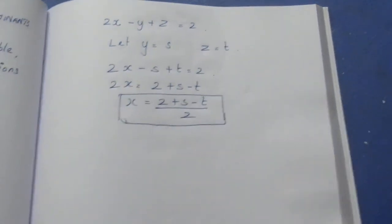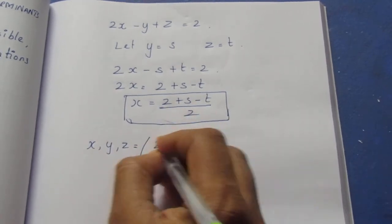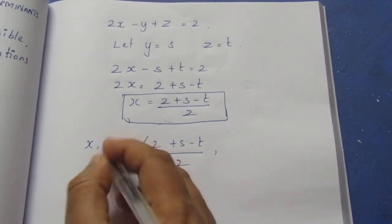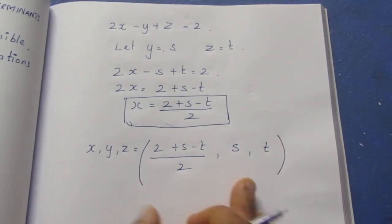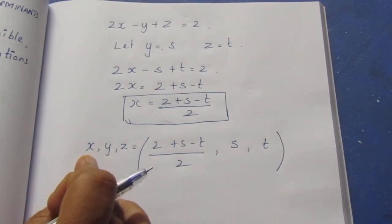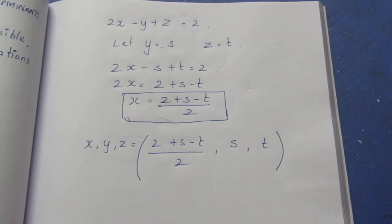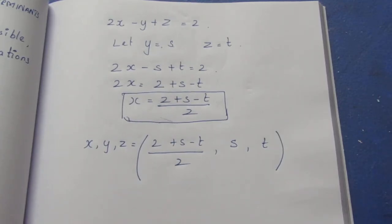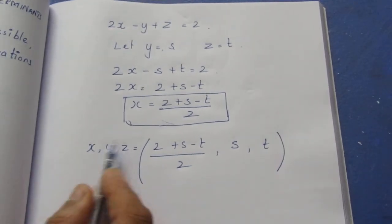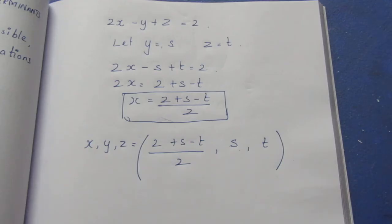So you have to answer these values. This is the value of x. What is x value? What is y value? What is z value? This is the value. That's infinitely many solutions. If you know the variables, you can use them. x is the value, y is the value, z is the value. You can know easily. That is the sum. Thank you.